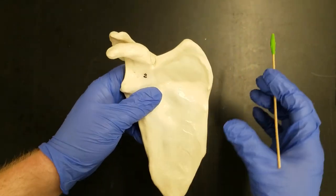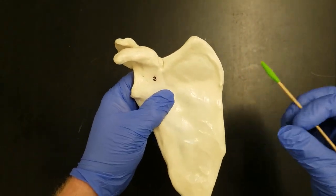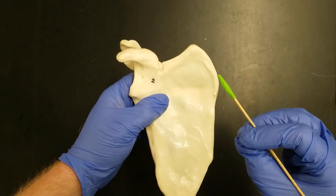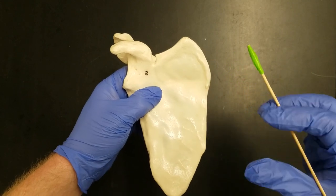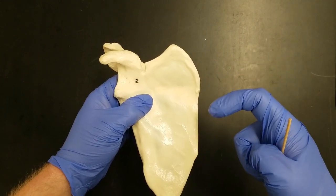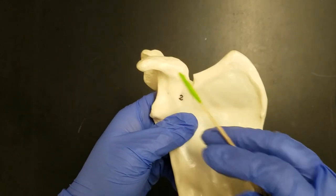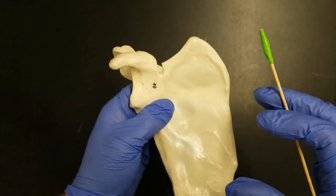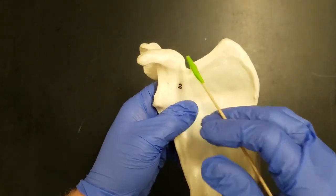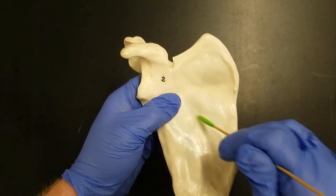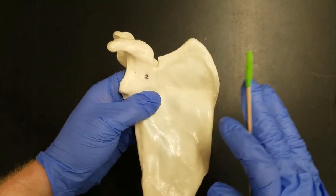One thing that first-time anatomy students often do is they confuse the terms coronoid with coracoid. Coronoid means hook-shaped. Coracoid means shaped like a crow. The way I remember this is coracoid with a C is on the scapula, because scapula has a C. Scapula doesn't have an N.